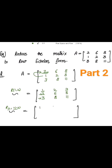First, write the first row: 1, 2, 3. Multiply 1 with minus 2 to get negative 2, and add this to the second row to get 0. Multiply element 2 with minus 2 to get minus 4, and adding with element 6 of the second row gives 2. Then multiplying 3 with minus 2 and adding with 8 also gives 2.